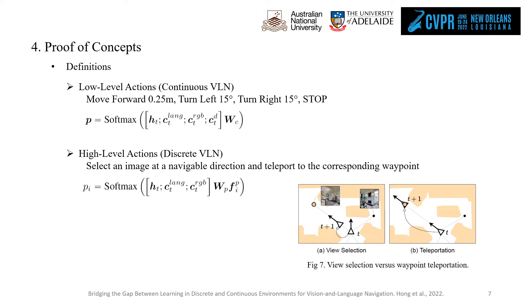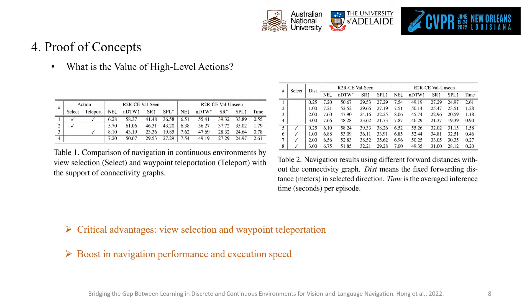In this work, we first study the benefit of navigating with high-level actions, which we identify as view selection — that is, choosing a single view among a panorama as the direction to navigate — as well as waypoint teleportation, that is, jumping to a distant viewpoint in the selected direction, as the key advantages. Through ablation experiments in Table 1 and Table 2, we found that view selection greatly improves the agent's success rate since it explicitly formulates a text-to-image grounding problem for learning, while waypoint teleportation significantly speeds up execution due to much fewer decisions to make.